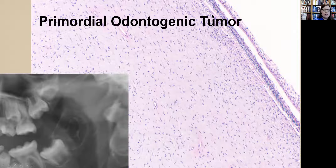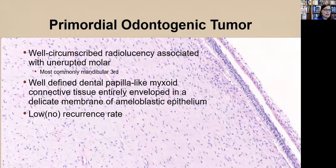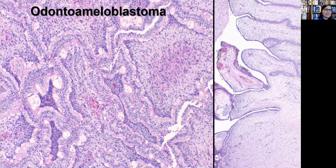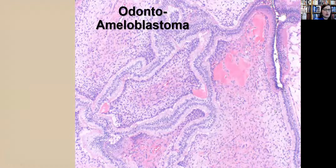The primordial odontogenic tumor has ameloblastic epithelium that rims the edge of the tumor. This is a relatively new tumor recently included in the WHO Blue Book, seen in the posterior molar area, with a primitive myxoid dental papilla-like tissue surrounded by a rim of ameloblastic epithelium. It's called a tumor, but there are no described recurrences and only a handful reported. The odonto-ameloblastoma has cords of ameloblastic epithelium, a primitive pulp-like stroma, and areas of hard tissue mineralization — hence the 'odonto' component.